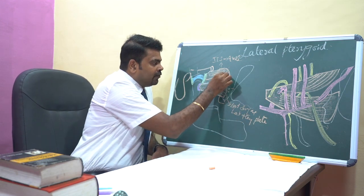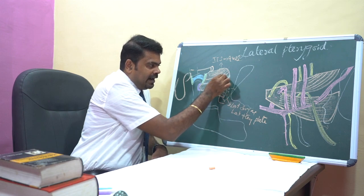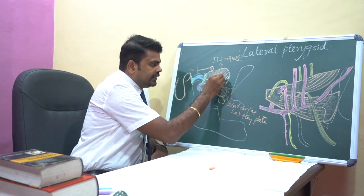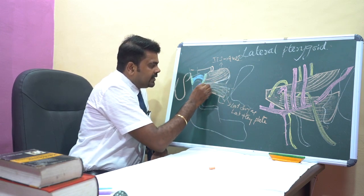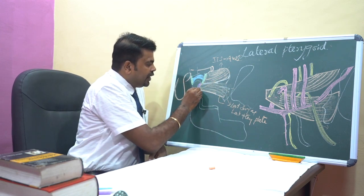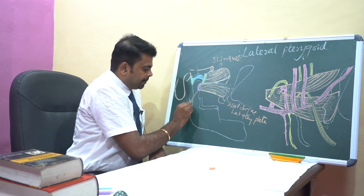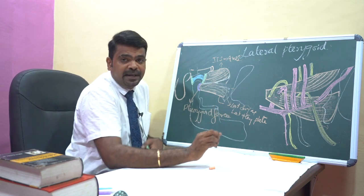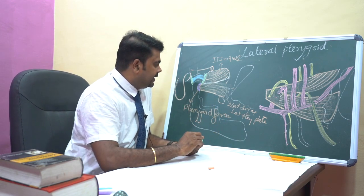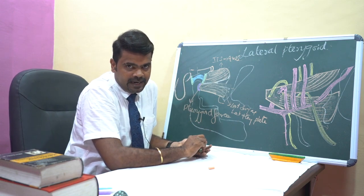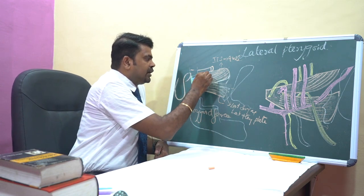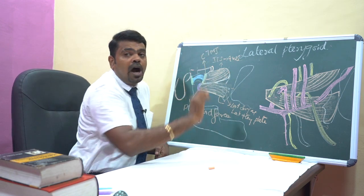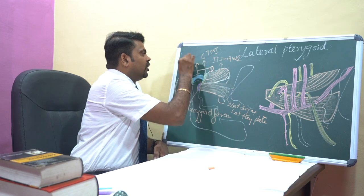These two heads pass laterally and converge to form a narrow tendon, which gets inserted into the pterygoid fovea. The pterygoid fovea is a pit or depression present in the anterior aspect of the neck of the mandible. It also gets inserted into the capsule of the temporomandibular joint and into the articular disc.